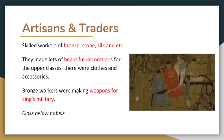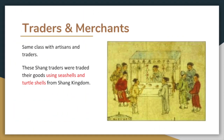Artisans and traders. Artisans or craftspeople are skilled workers of bronze, stone, silk, etc. They made lots of beautiful decorations for the upper classes, including clothes and accessories. Bronze workers made weapons for the king's military. They were in the class below nobles. Traders and merchants were in the same class as artisans. These Shang traders traded their goods using seashells and turtle shells from the Shang kingdom.